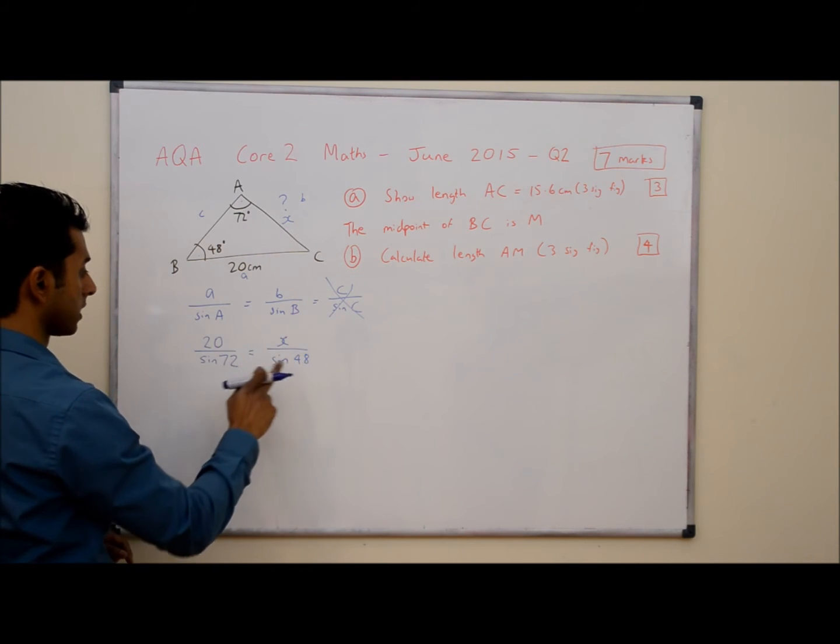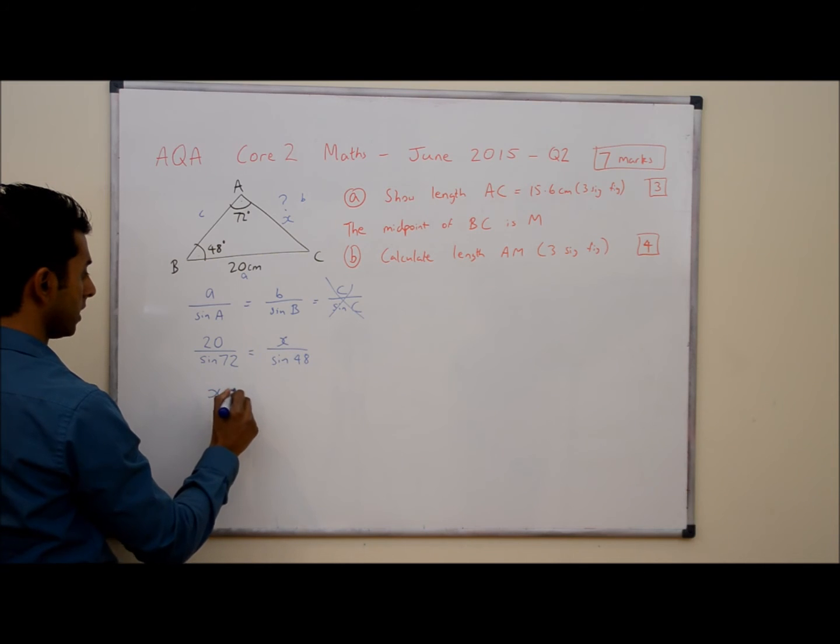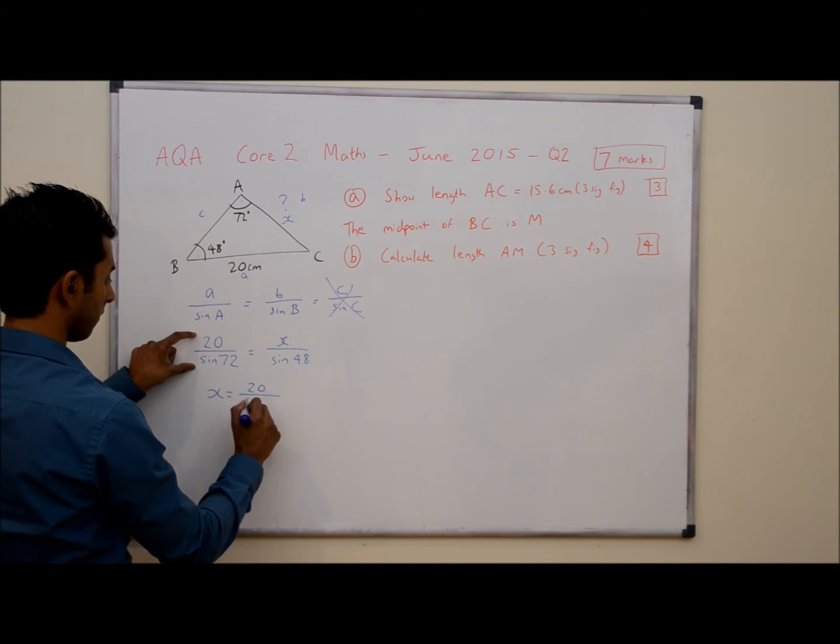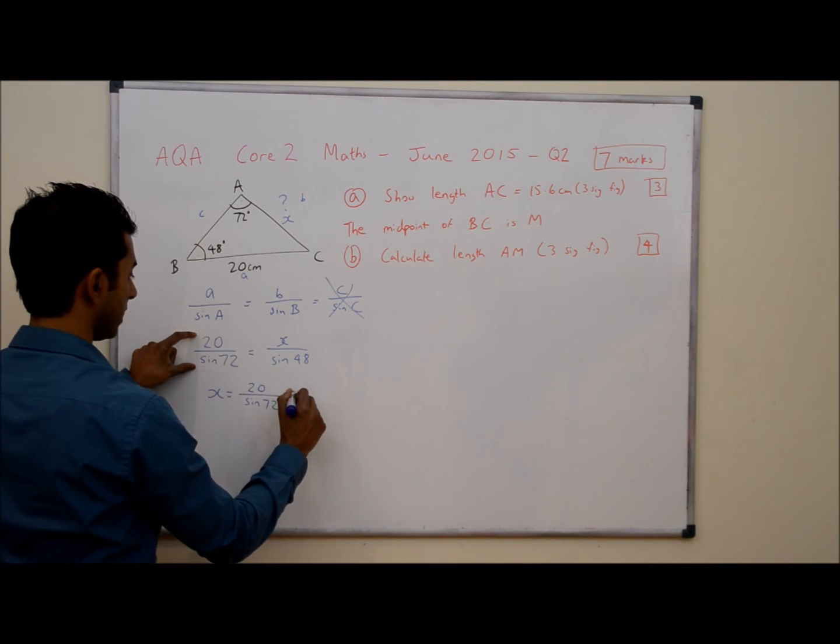Now in order to find x I just need to rearrange and make x the subject. So x is equal to this fraction and then to get rid of this we need times by sine 48.